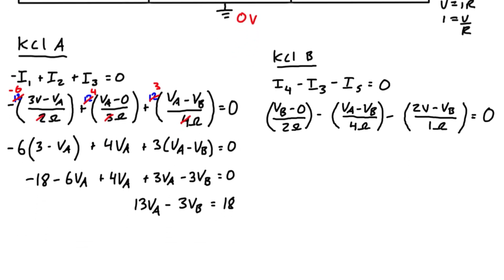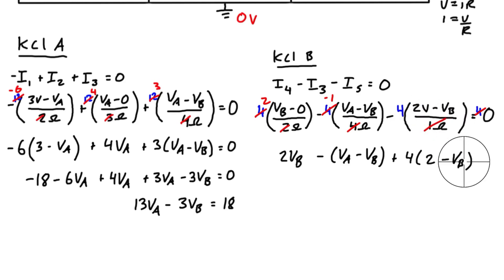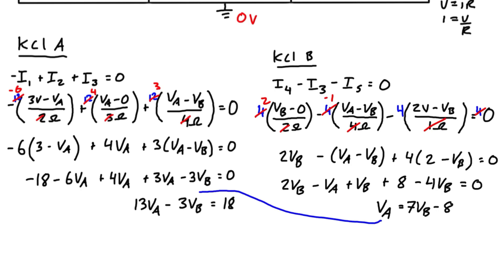Multiplying every term by the lowest common denominator of 4: the 4s cancel appropriately, leaving the first term as 2Vb, then minus (Va − Vb), then plus 4(2 − Vb), all equal to zero. Distributing and simplifying, this reduces to: Va = 7Vb − 8.